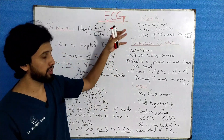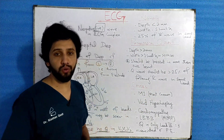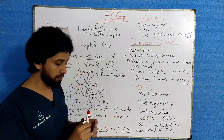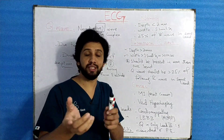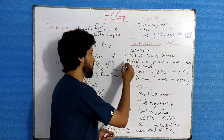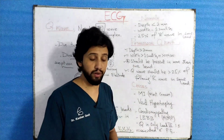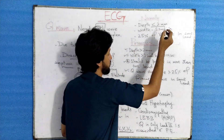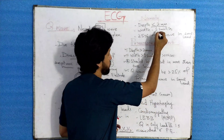Now, regarding normal and pathological Q waves: when you see the Q wave, you will focus on three or four things — depth, width, and its proportion relative to the R wave of the same lead. These are the things to keep in mind when discussing pathology of the Q wave. Normally, the depth of the Q wave will be less than 2 mm and its width will be less than or equal to one small square.